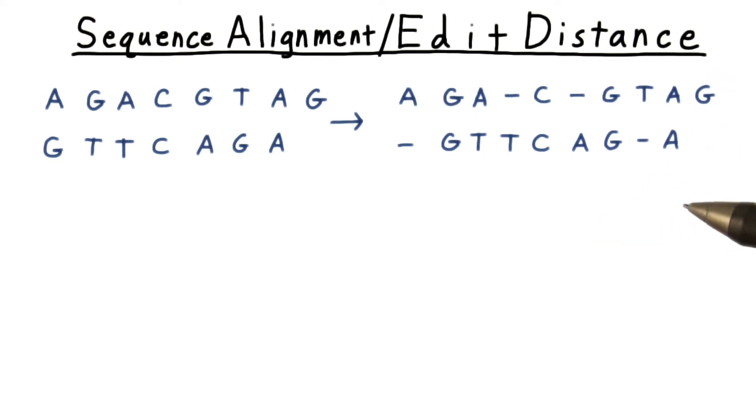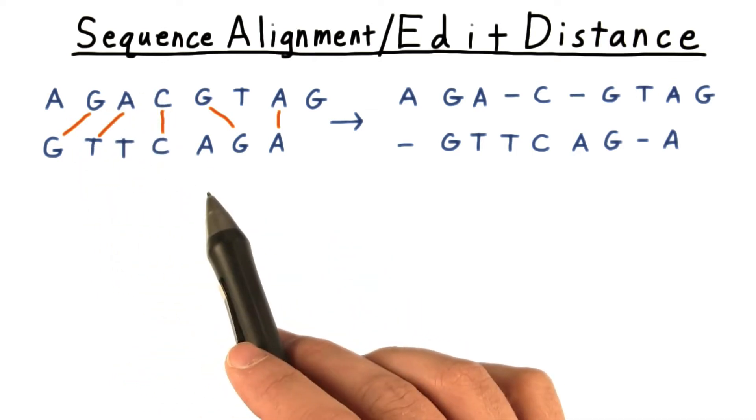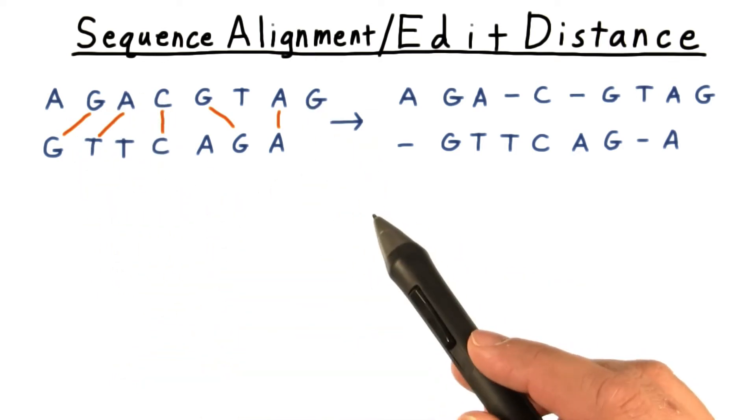And we'll do this according to some cost function that represents how likely these changes are to have occurred in nature. Another way to think about this is to say that I have aligned these elements of the sequence here, and left some of the elements unmatched.